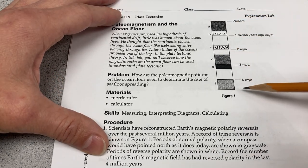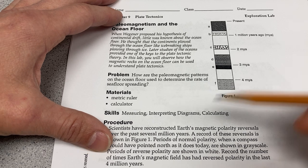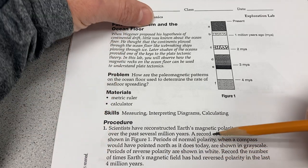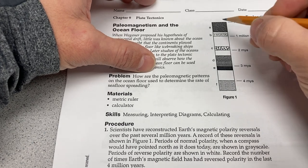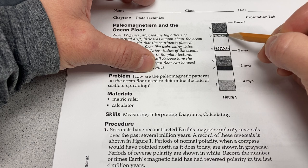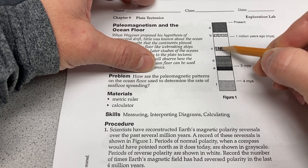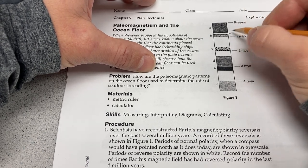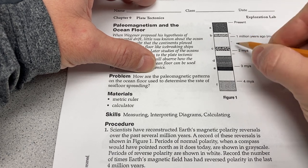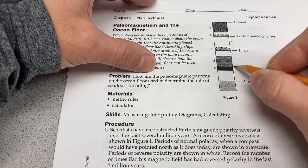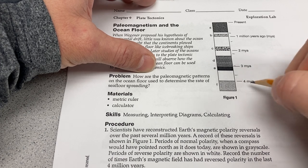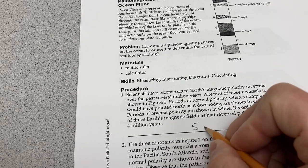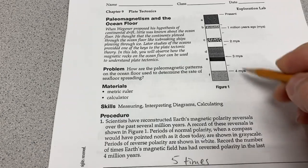This diagram goes from present all the way down through the last four million years. We want to know how many times it's reversed polarity. Reverse polarity on this diagram is shown in white — that just means the compass would have pointed the other direction. These sections here are actually shaded too, so counting the reverse polarity periods — those are white — there's one, two, three, four, and then five times we've reversed polarity. So we've reversed polarity five times in the last four million years.